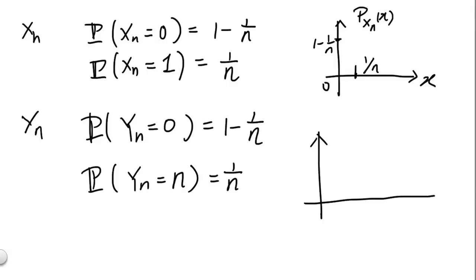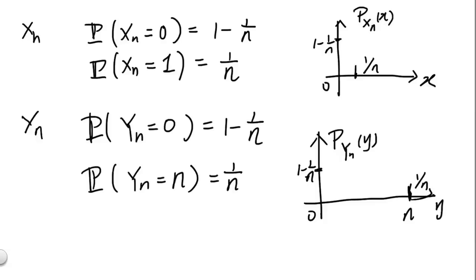To contrast the two graphs: at 0, they have the same amount of mass, 1 minus 1 over n. But for yn, the small mass of 1 over n is all the way out at location n. For the remainder of the problem, we'll be looking at the regime where n tends to infinity, and studying what will happen to these two sequences of random variables.